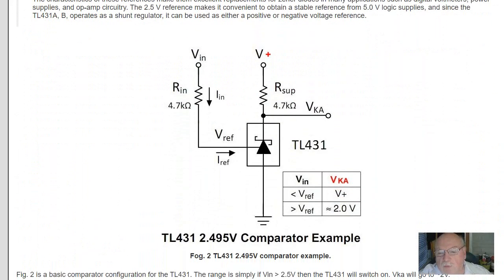From the spec sheet here is your basic comparator configuration. Again, it stands as a 2.5-volt comparator. When VIN exceeds 2.5 volts, VKA, the output, will drop to 2 volts.